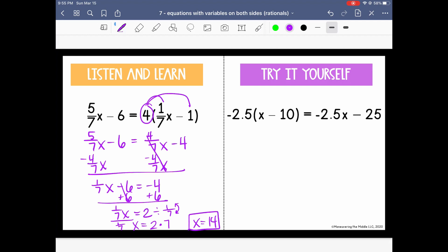Feel free to pause it and try the example on the right. And now let's work through it. So we distribute this -2.5, or 2 and 5 tenths, first. So when we distribute, we have -2.5x, and then negative times, think of this as -10, is going to give me positive 25. Then I have -2.5x minus 25.